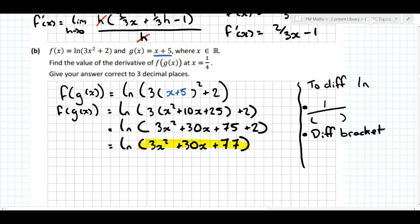And what I mean by this is the bracket. So it's 1 over, so that was f after g of x. So the derivative of that is df after g of x dx. It's going to be 1 over the bracket, 3x squared plus 30x plus 77, times the derivative of the bracket, or differentiate the bracket. So it'll be 6x plus 30.